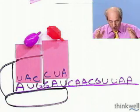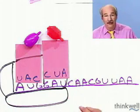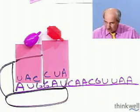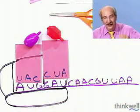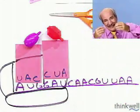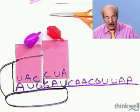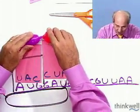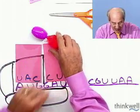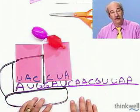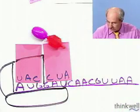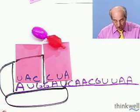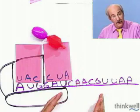Now we have two amino acids. What's going to happen? With the help of GTP, a dehydration synthesis occurs, and because of phosphorylated intermediates we get a peptide bond. Now the ribosome can move over.